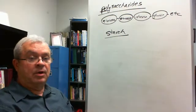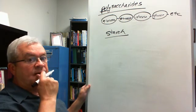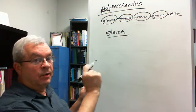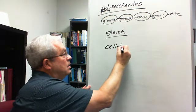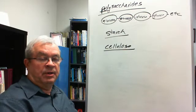That's another one shown in that picture in your textbook. Polysaccharide number three is cellulose. Cellulose is also made of a bunch of glucoses hooked together in a somewhat different way than starch.